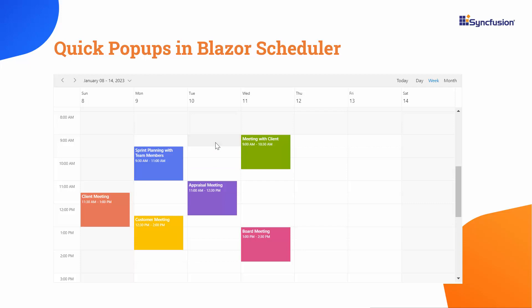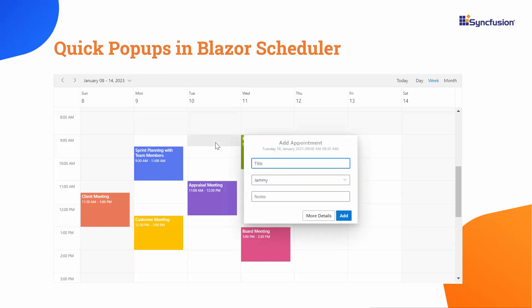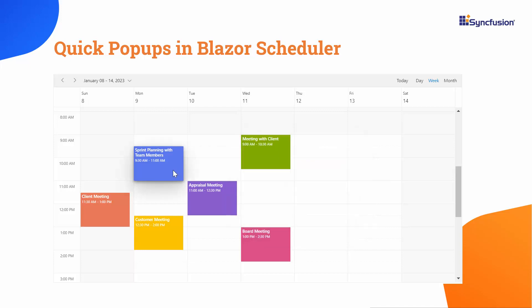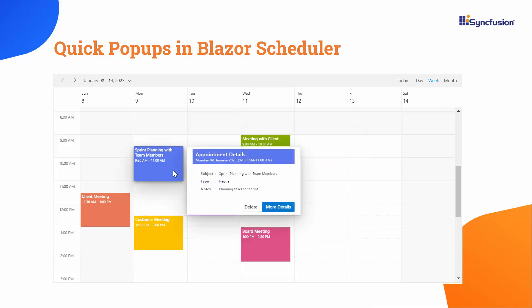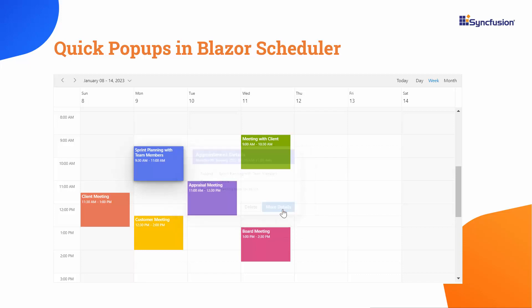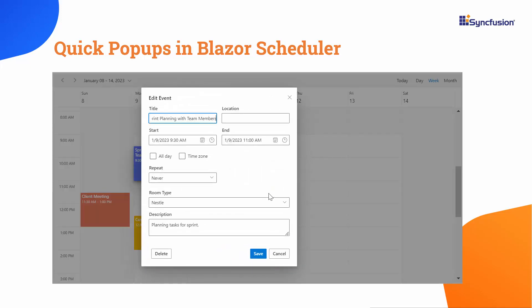On clicking a cell, you can simply provide a subject and save it. Also, while clicking on an event, a pop-up will be displayed where you can get the overview of the event information. You can also edit or delete those events through the options available in it.